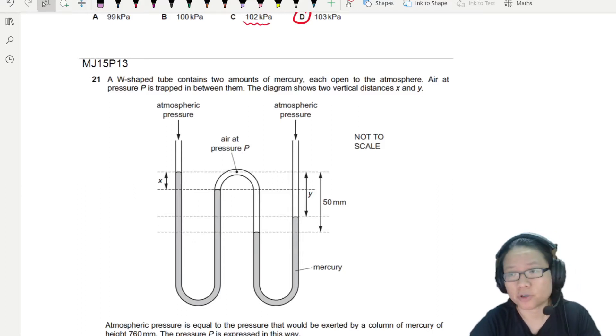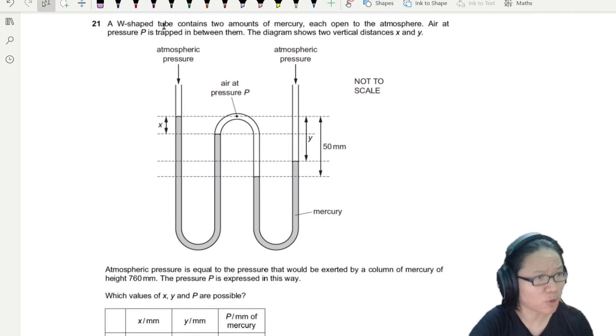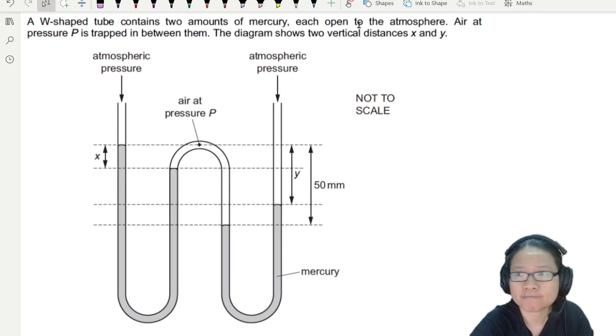In this example from Summer 15, paper 1-3, we're going to look at not a manometer, it's a double manometer, it's a W-shaped tube. So this double tube, this W-tube contains two different amounts of mercury, each open to the atmosphere.